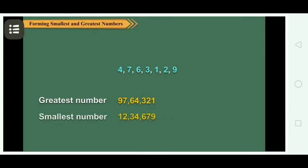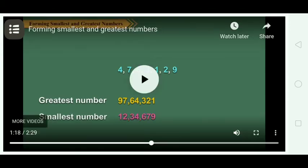So the smallest number is 12,34,679. The descending order gives the greatest number as 97,64,321.